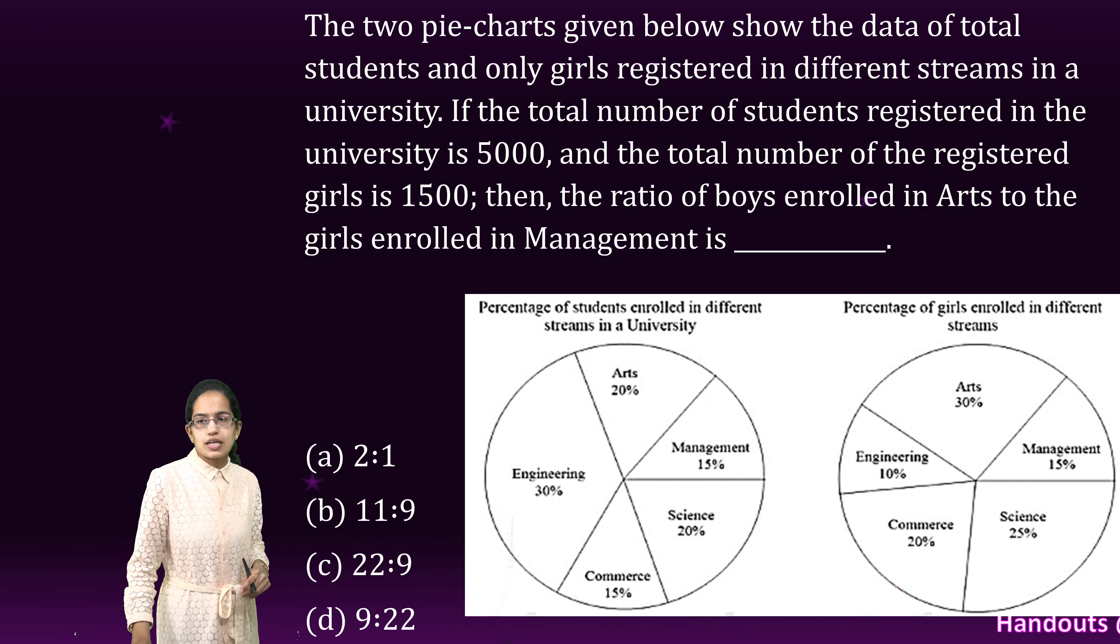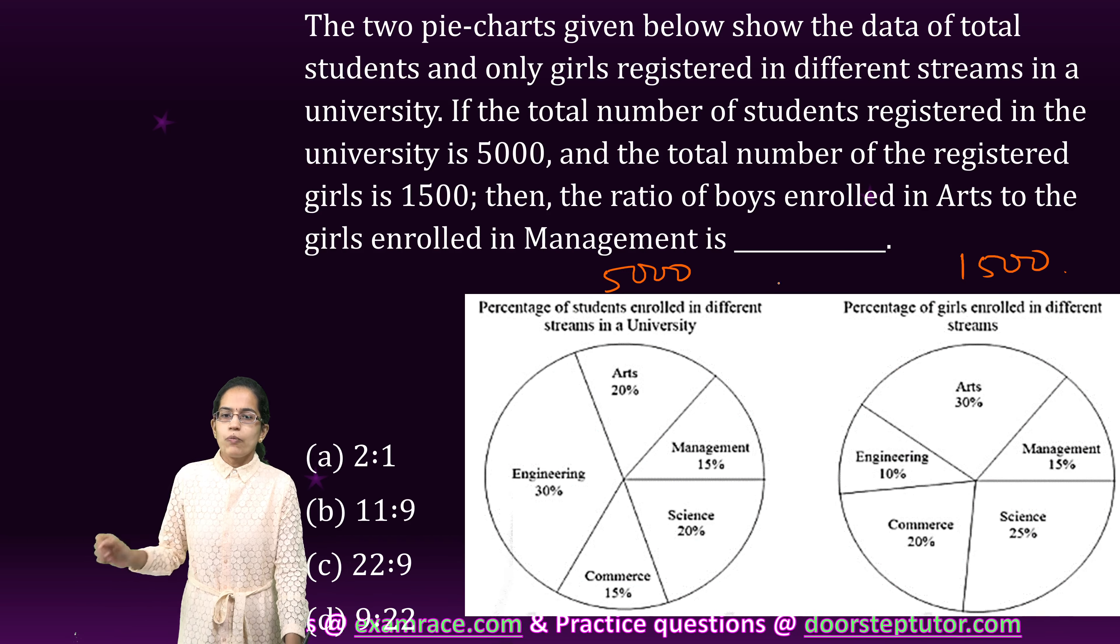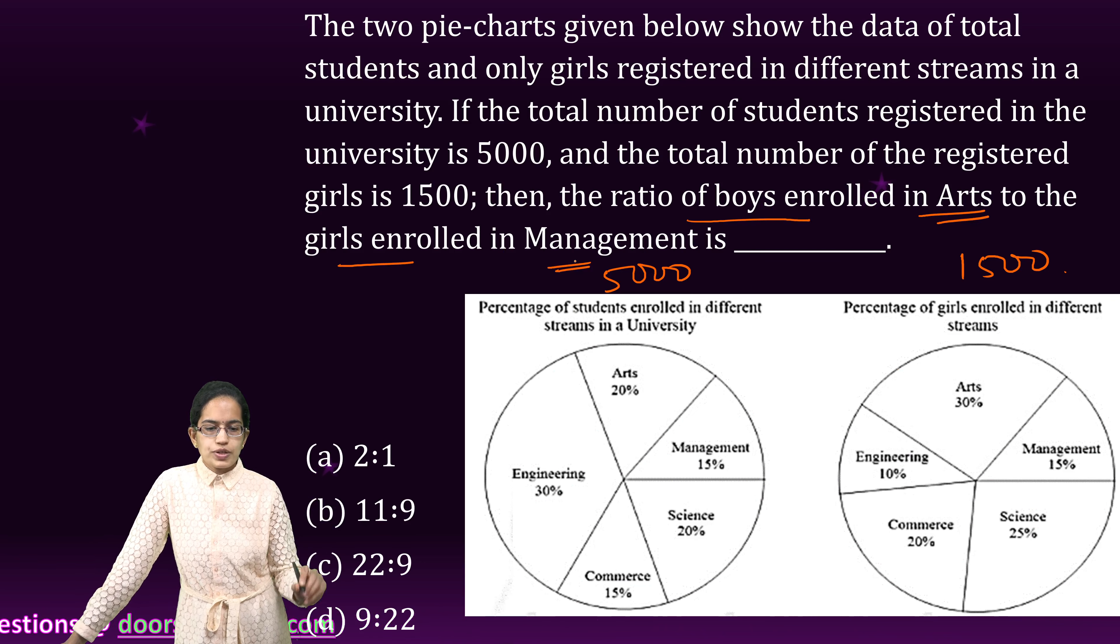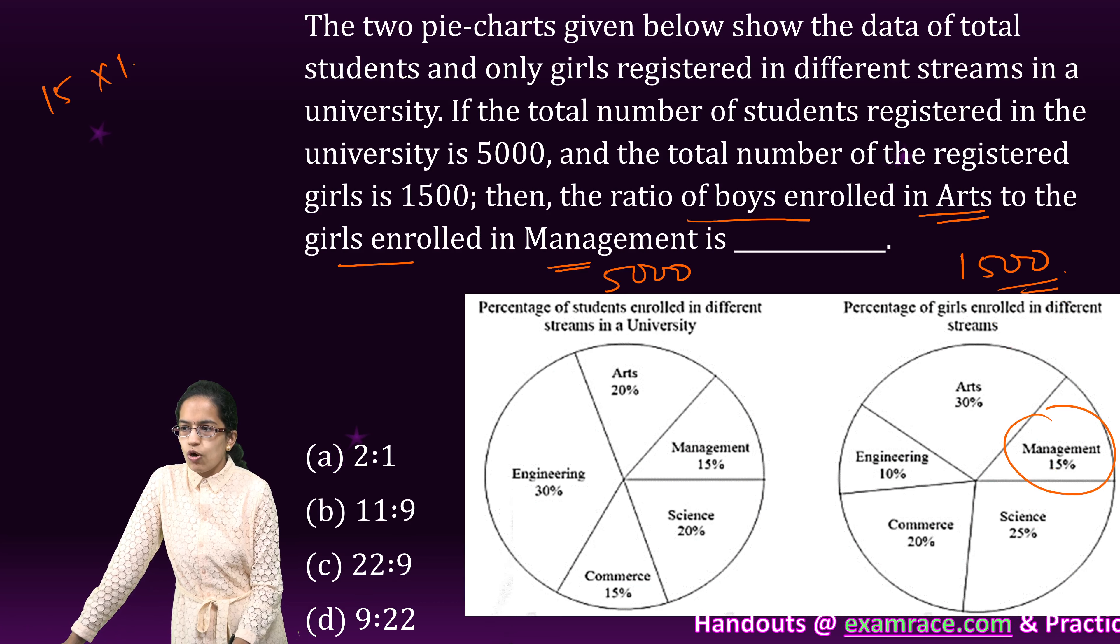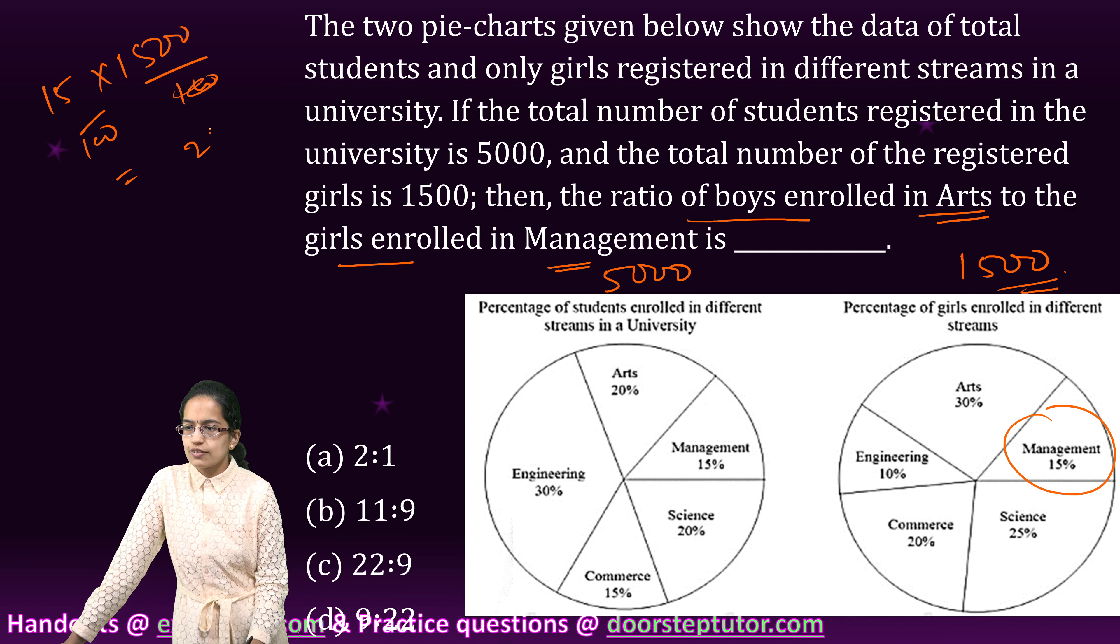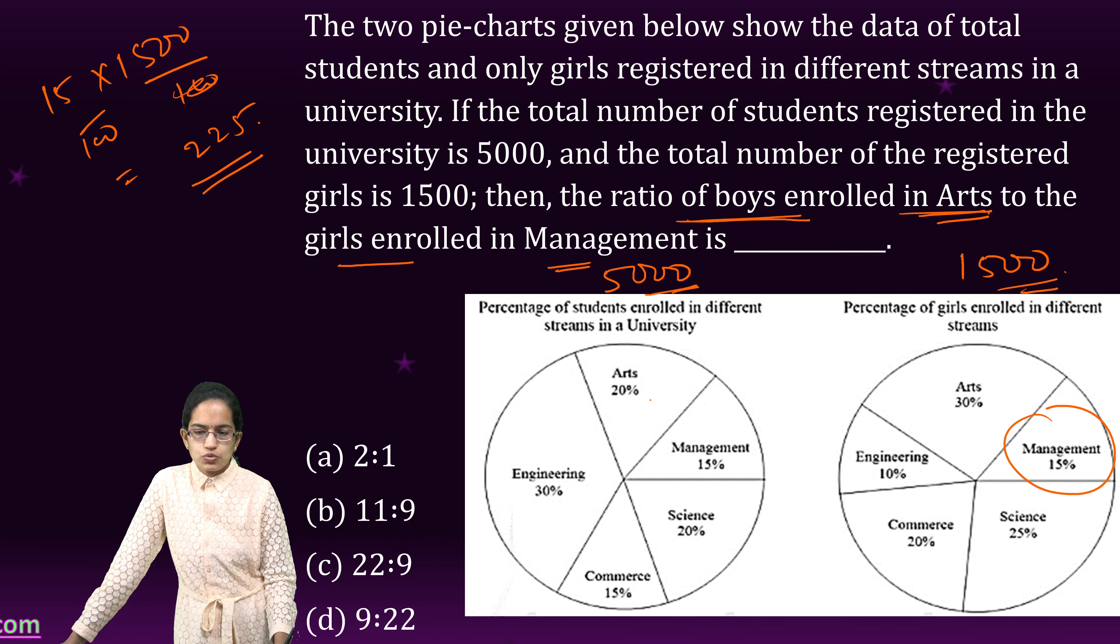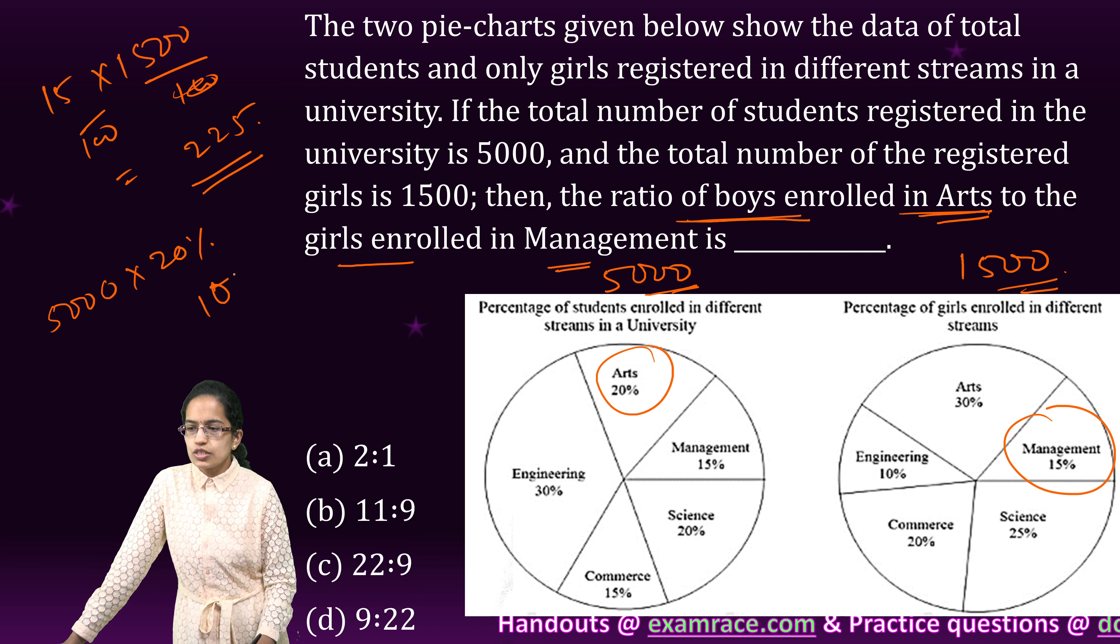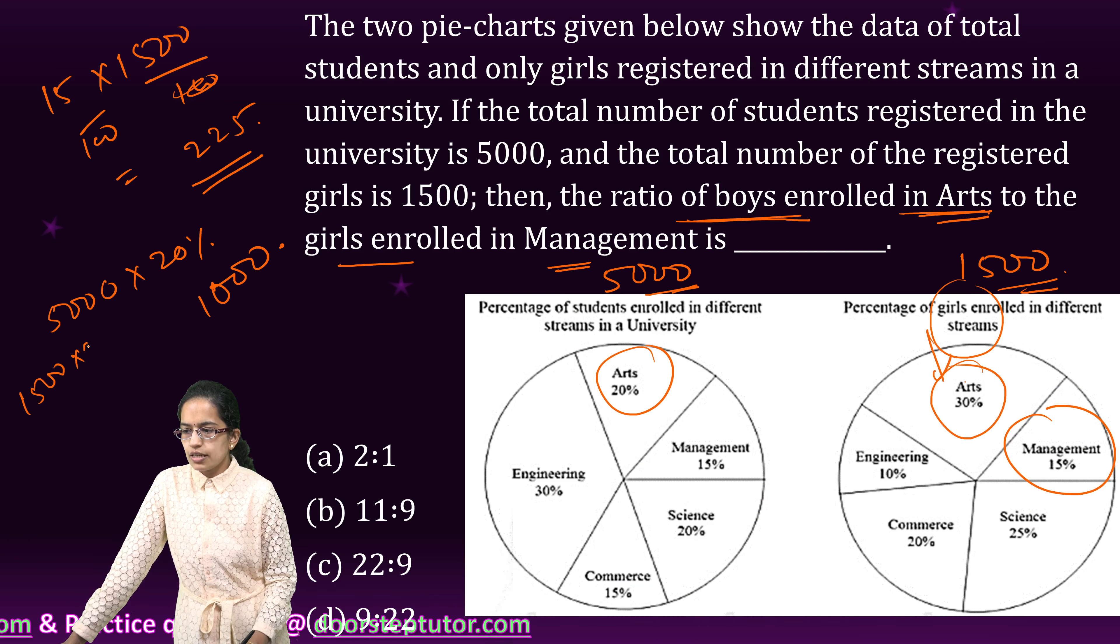The next and the last question here: there are two pie charts. I have the total number of students that are 5,000, total number of girls enrolled that are 1,500. Now the question says you have to find the ratio of boys enrolled in arts to the girls enrolled in management. So first of all, I take the girls enrolled in management. So that is very simple. 15% is management. So 15% of 1,500, so 15 by 100 of 1,500 that gives me 225. So 225 is the number of girls. Now I have to find out the number of boys in arts. So in the arts, total number of students are how many? 5,000. 5,000 out of that 20% are in arts. So I have 1,000 students in arts. And when it comes to girls, I have 30% girls in arts. So how many girls? 1,500 girls, 30% of 1,500, that is 450 girls.